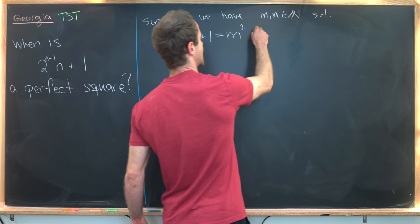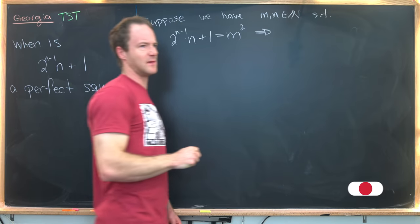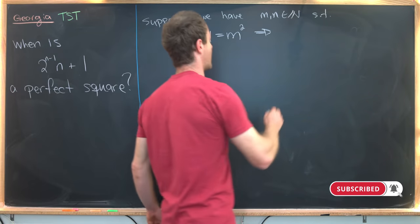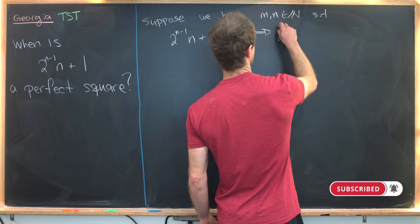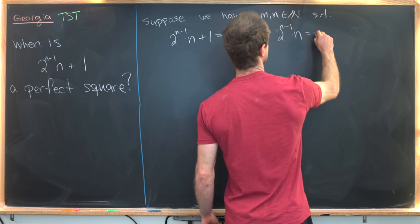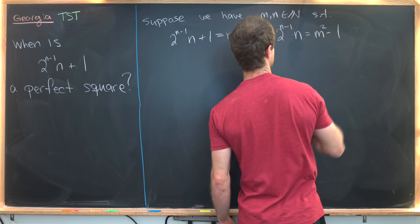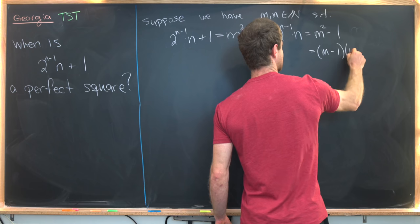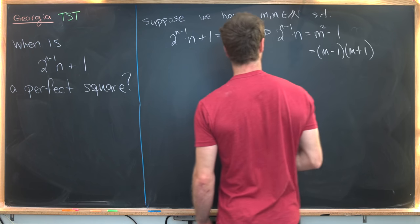Now notice that based on my hint, we should probably move that 1 over. That leaves us with 2^(n-1) × n = m² - 1. But we can factor that as (m-1) × (m+1).